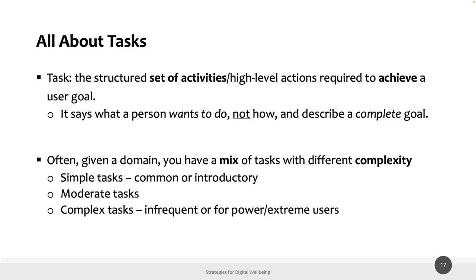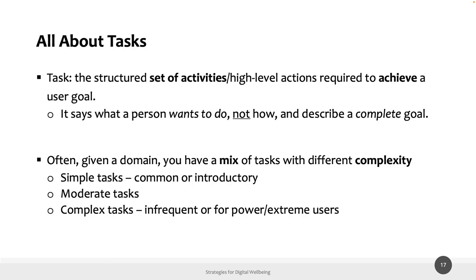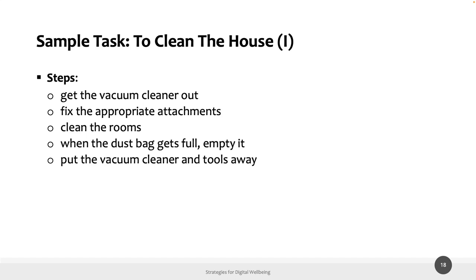A task says what a person wants to do, not how — this is important. A task should describe a complete goal. The goal is the final state of the application that you want to achieve. A task is more abstract and implicitly includes the set of actions you need to achieve a particular goal.